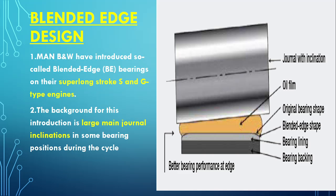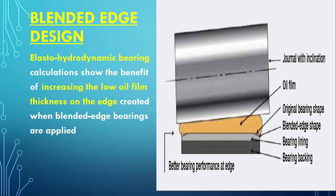Today's engines are using thin shell bearings as a replacement for thick shell bearings. It is called the blended edge because of the curvature formed at the edge, which causes increased oil film thickness. This increased oil film thickness at a certain inclination ensures that elasto-hydrodynamic lubrication is formed. The key takeaway is that because of the blended edge, the overall oil film thickness is increased, allowing lubrication to continue even at inclination, thereby preventing edge loading.